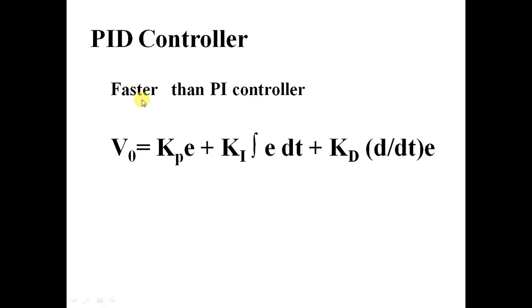In PID controller, you have differential part additionally. PID is faster than PI. The overshoot will be less with the PID.